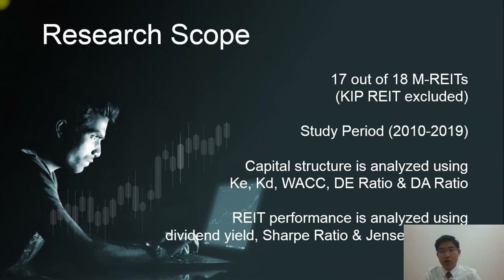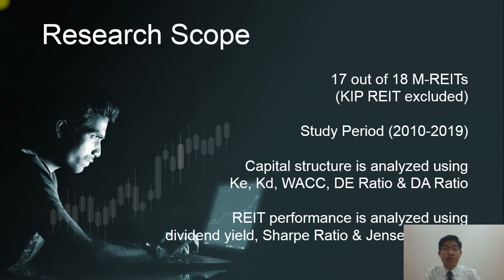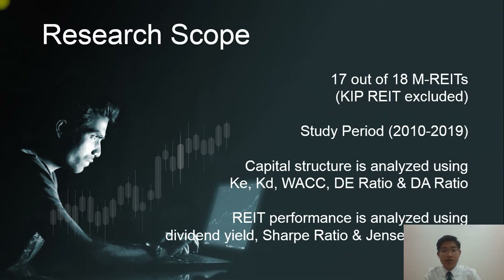The scope of the research covers 17 out of 18 MREITs listed in Bursa Malaysia. KIP REIT was excluded because it was newly launched in 2017. The study period is 2010 to 2019, a 10-year period. For capital structure, proxies used are cost of equity, cost of debt, weighted average cost of capital, debt-to-equity ratio, and debt-to-asset ratio. For REIT performance, the analysis uses dividend yield, Sharpe ratio, and Jensen's Alpha.